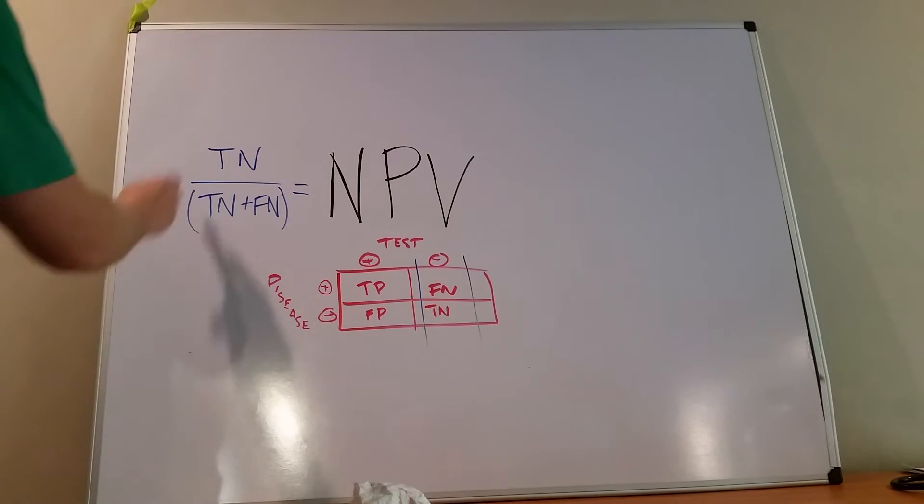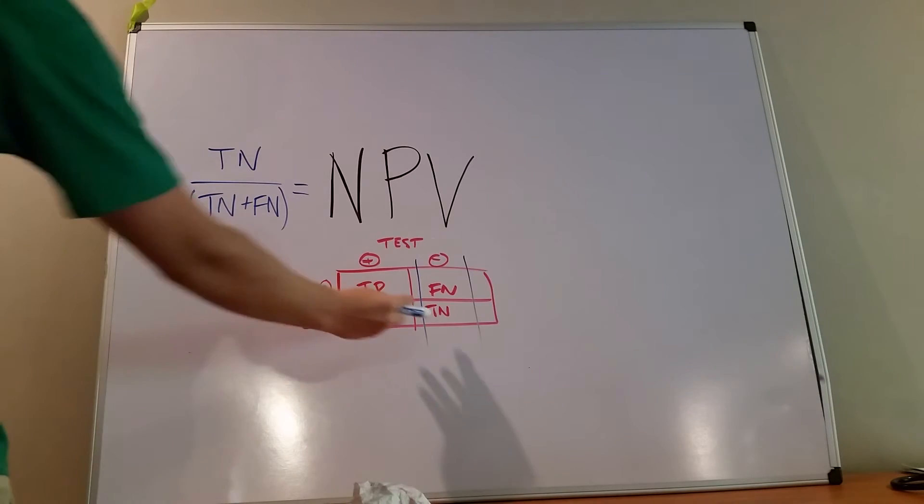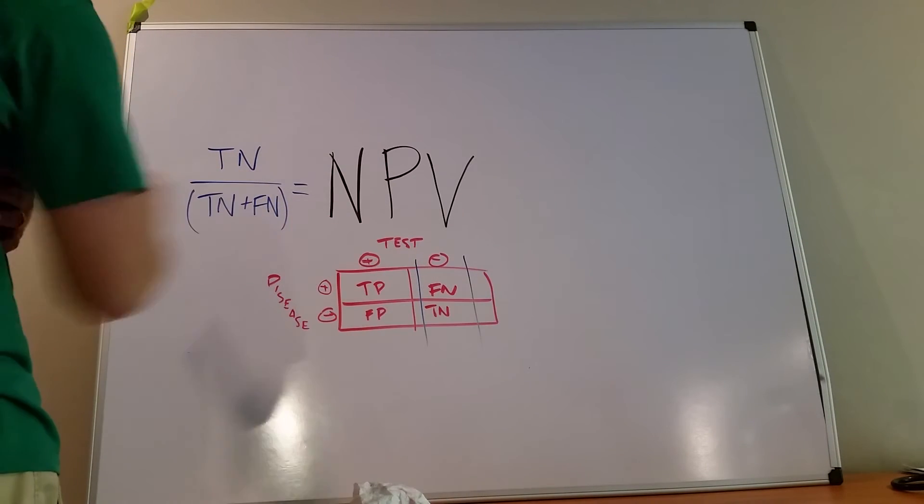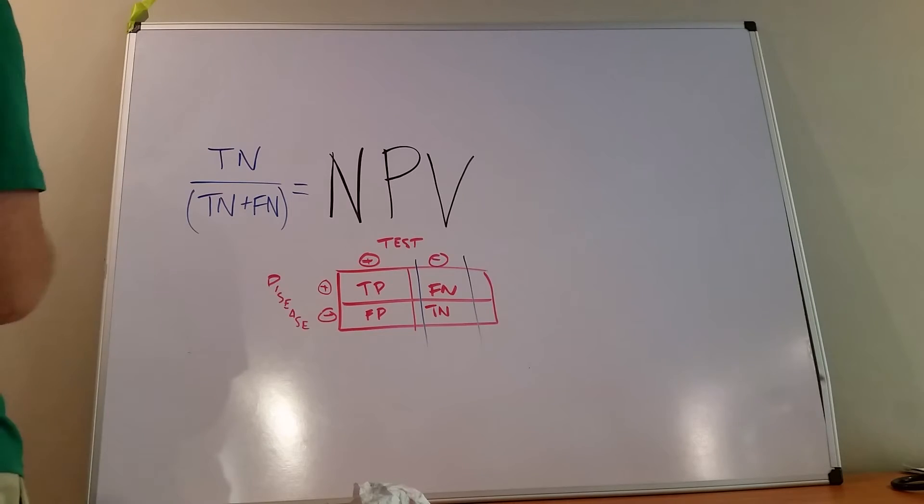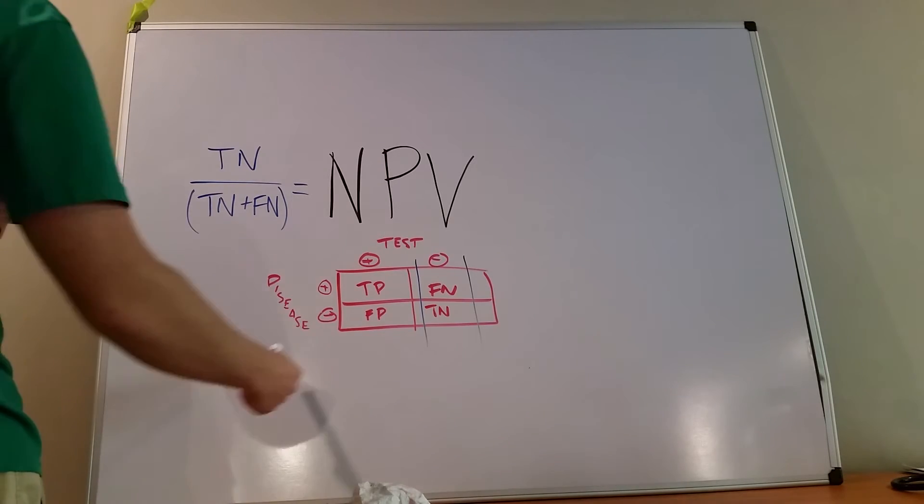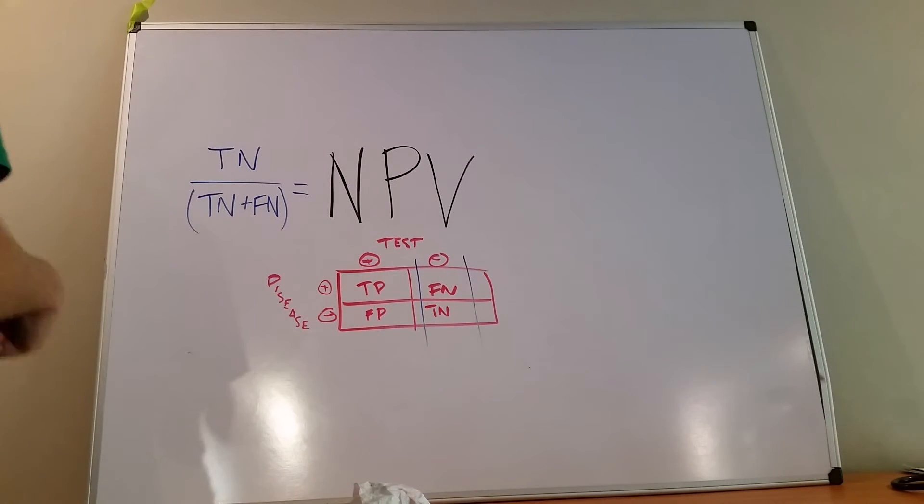So first of all, what is a true negative? A true negative occurs when a test says you don't have it. So the urine dipstick says you are not pregnant and you are indeed in reality not pregnant. That's a true negative outcome.